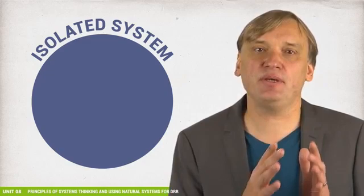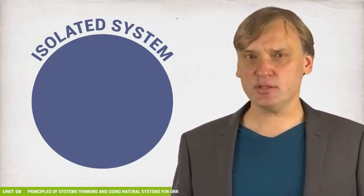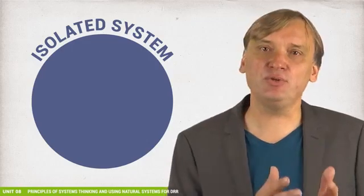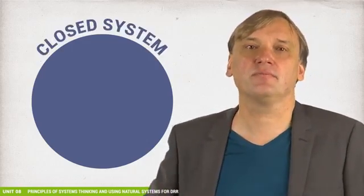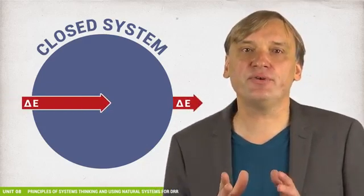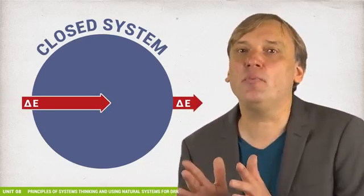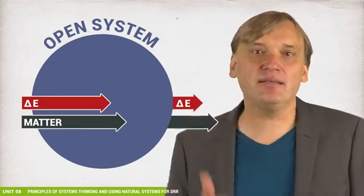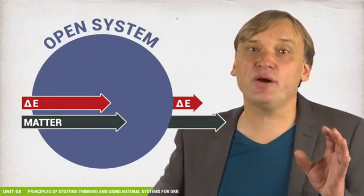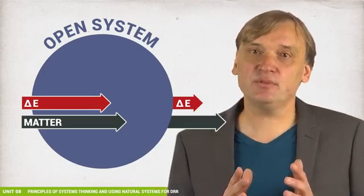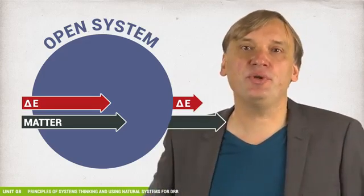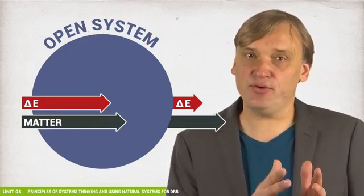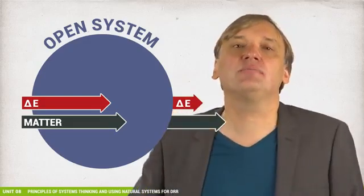In thermodynamics we distinguish between three types of systems. An isolated system has no interactions beyond its boundary layer. Such a system does not exist in nature but is used in controlled laboratory experiments. A closed system transfers energy across its boundary but no matter. And finally, an open system transfers both matter and energy across its boundary to the surrounding environment. Ecosystems are of course open systems because communities of organisms interact with each other and with the environment outside the ecosystem boundary.